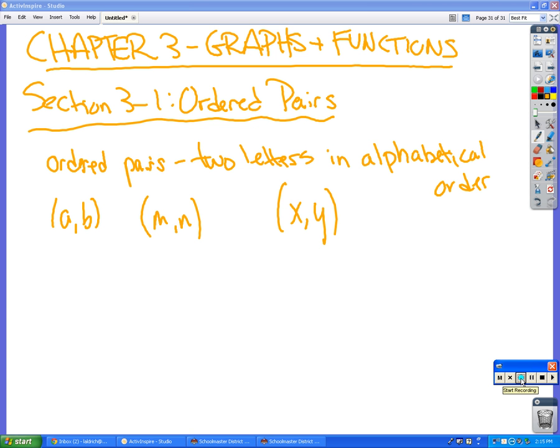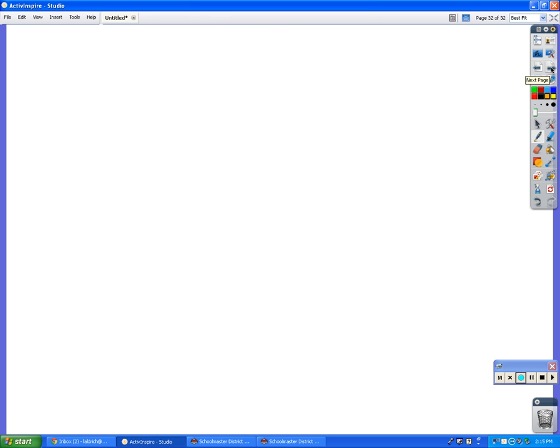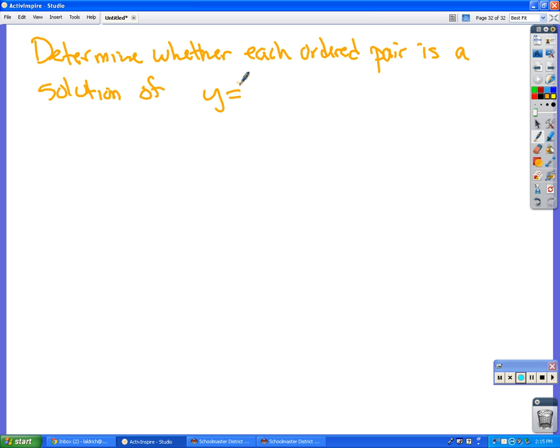All right, we ready now? Yeah, we're ready. Okay, so ordered pairs is going to be two numbers. The first one is usually the X, the second one is usually the Y, but they can change that. It could be an A and a B, it could be an M and an N, it could be a Q and an R. It doesn't matter. But usually it is going to be an X and a Y. So what we're going to do is we are going to determine whether each ordered pair is a solution of Y equals 3X plus 2.